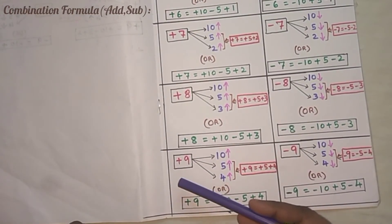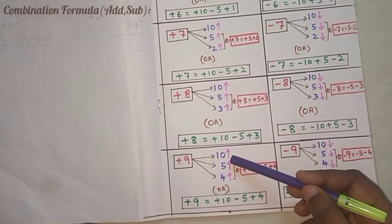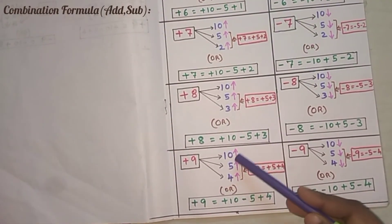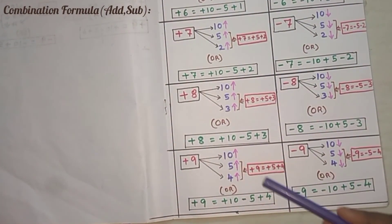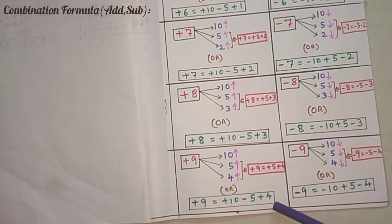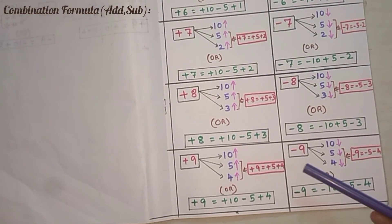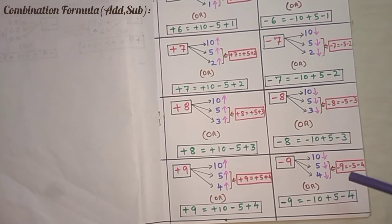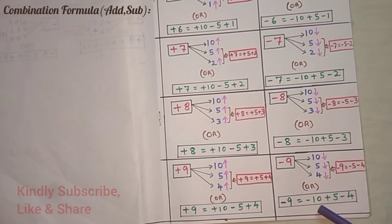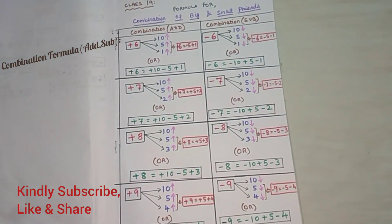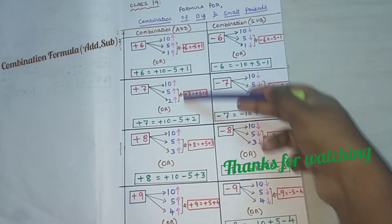The combination formula for adding 9: +9 = 10 up, 5 up. Since 5 + 4 = 9, move 4 beads in the upward direction. 10 upward means plus 10, 5 upward means remove 5 beads from the answer point, and move 4 beads towards the answer point — that means plus 4. For subtracting 9: 10 downward, 5 downward. Since 5 + 4 = 9, move 4 beads in the downward direction. 10 downward means minus 10, 5 downward means plus 5, and 4 downward means minus 4. These are the combination formulas for adding or subtracting any numbers from 6 to 9.